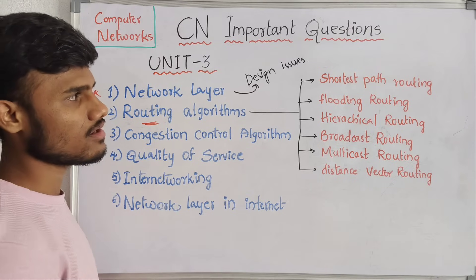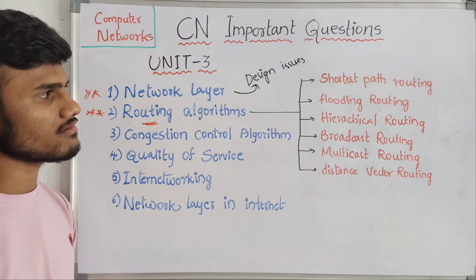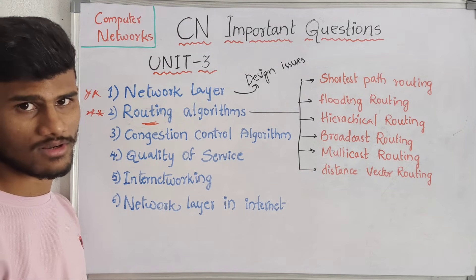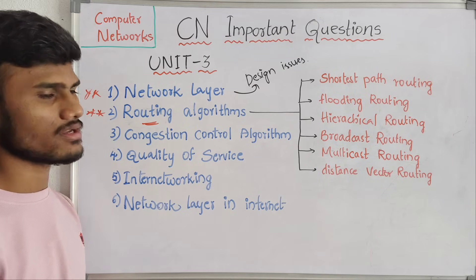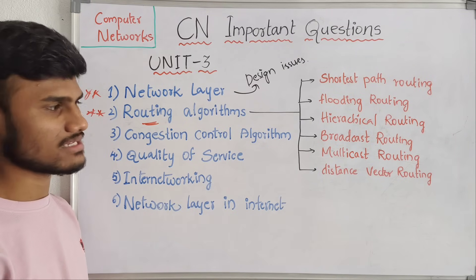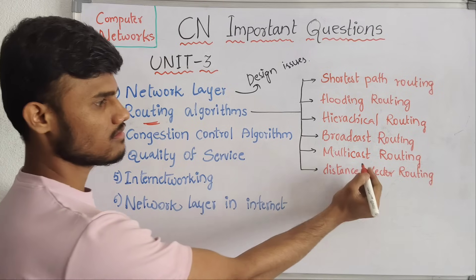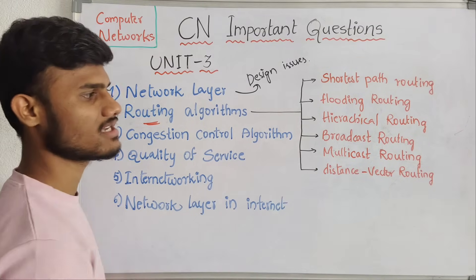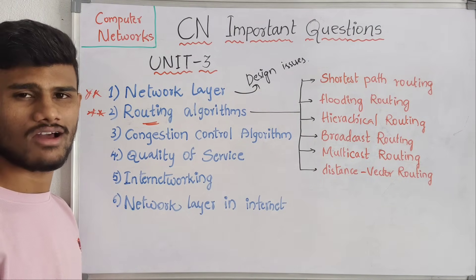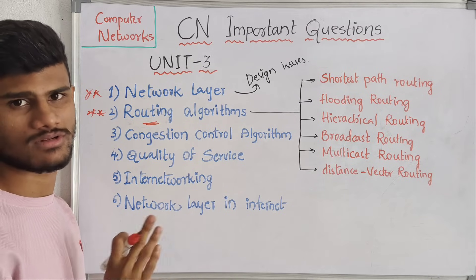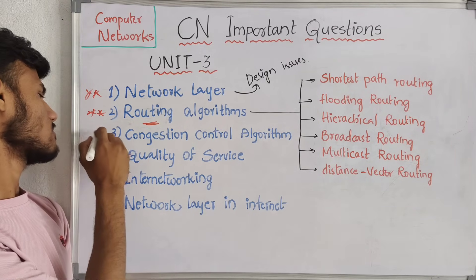In routing algorithms we have: shortest path routing, flooding routing, hierarchical routing, broadcast routing, multipath routing, and distance vector routing. These are all six types of routing algorithms.